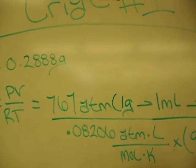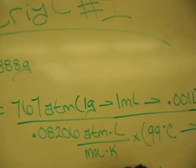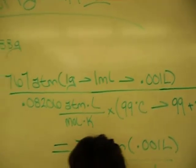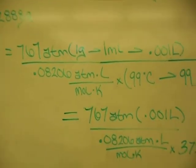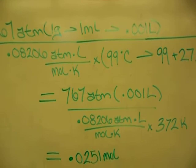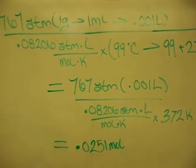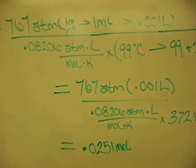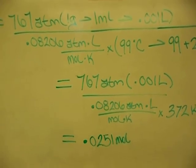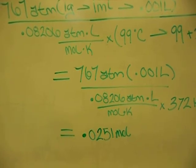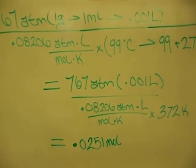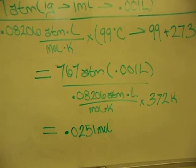We calculated 767 atmospheres. We calculated 0.001 liters. Our constant is 0.08206 atmospheres times liters over moles times kelvin, and our temperature was 372 kelvins.